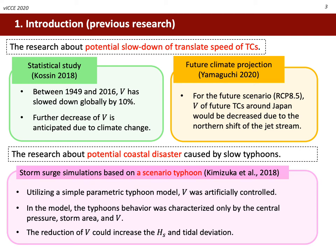In this research, a typhoon wind field was expressed by a simple vortex defined as the central pressure, radius, and translate speed. Then the typhoon attacks a specific area. A scenario typhoon study is to discover the combination of parameters and tracks that would give the worst damage to the target place. This study concluded that the reduction of translate speed had influence on the increase of Hs and tidal deviation.